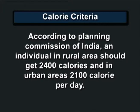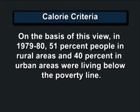According to the Planning Commission of India, an individual in a rural area should get 2400 calories and in urban areas 2100 calories per day. On the basis of this view, in 1979-80, 51 percent of people in rural areas and 40 percent in urban areas were living below the poverty line.